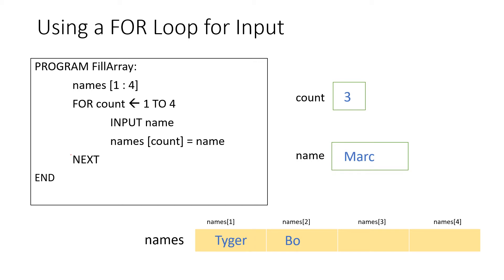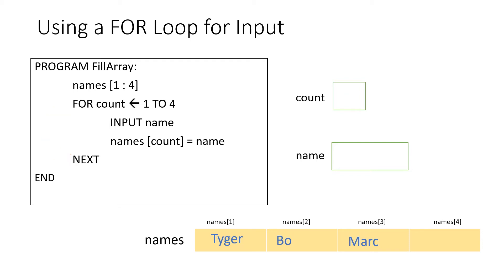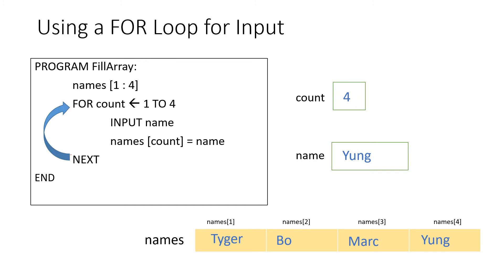names[count] = name, count is 3, so Mark gets copied into cell 3. Back to the top of the loop, the counter increments to 4. We input another name and names[count] = name, so that fills cell 4 and the array is now full.